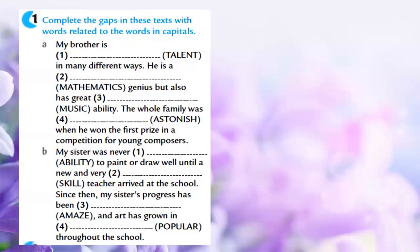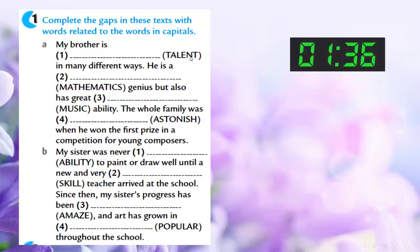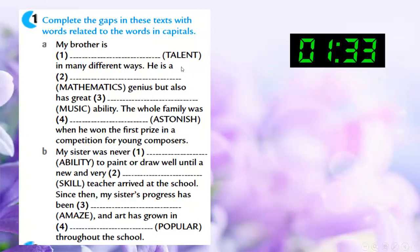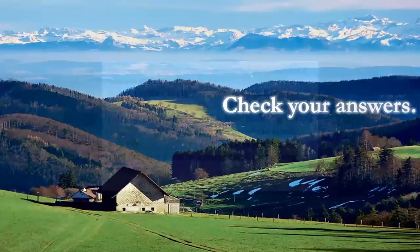In this exercise you are going to complete the gaps in these texts with words related to the words in capitals. You are going to form words from the capital words here between brackets. My brother is able to form a word from the word talent, and exercise 2 from the word mathematics, 3 from the word music, 4 astonish, 5 ability. Let's check the answers for this exercise.